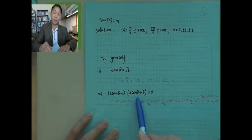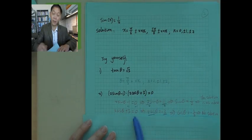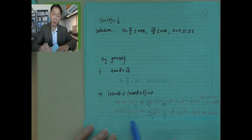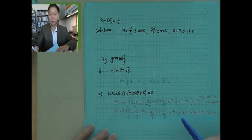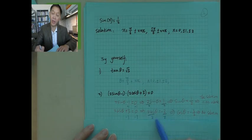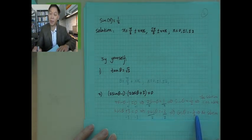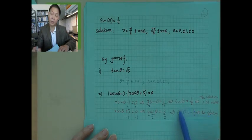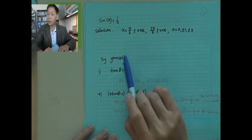Does the second factor, 2 cos theta plus 3 equals 0, give us another solution? If you subtract 3 from both sides, you get 2 cos theta equals negative 3. Divide by 2: cosine theta equals negative 3 halves. But cosine takes values between negative 1 and 1 — it cannot be less than negative 1. Here, negative 3 over 2 is below negative 1, so there is no solution from this factor. The only solutions are the same as above.